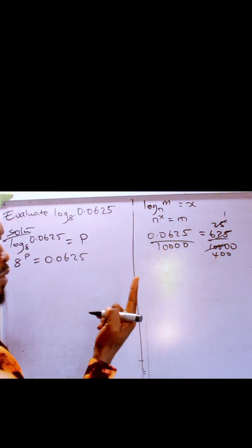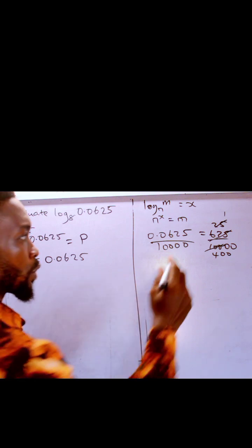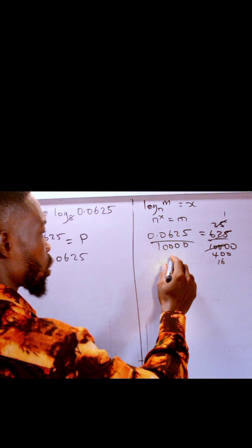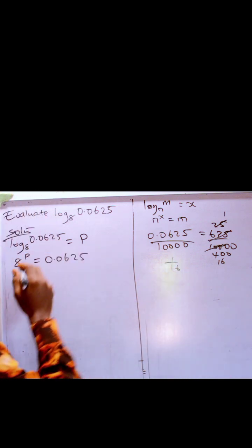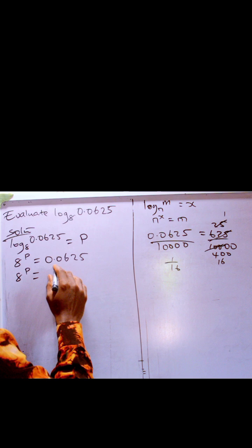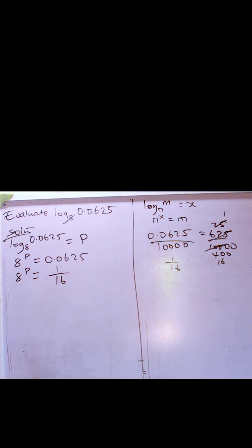If I divide again, 100 divided by 25 is 4, so 400 is like 4 times 4, which is 16. What it means is that this is the same thing as 1 over 16. So we can say that 8 raised to power p equals 1 over 16.